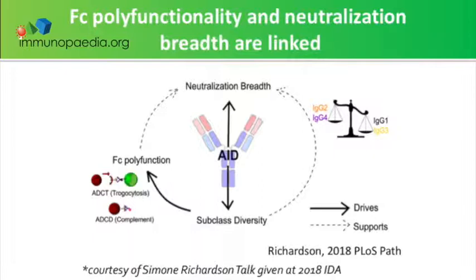While we couldn't find any evidence that FC effector function was eventually driving the development of breadth, it definitely seemed to support the development of breadth. We think that's through antigen presentation again, because the two functions that were higher in broadly neutralizing individuals were trogocytosis — which is involved in antigen presentation — and complement deposition. Recently, a paper from one of our collaborators showed that increased antigen presentation in broadly neutralizing individuals in their germinal centers was occurring through a complement-dependent pathway. So we think that's why we're seeing higher levels of complement.